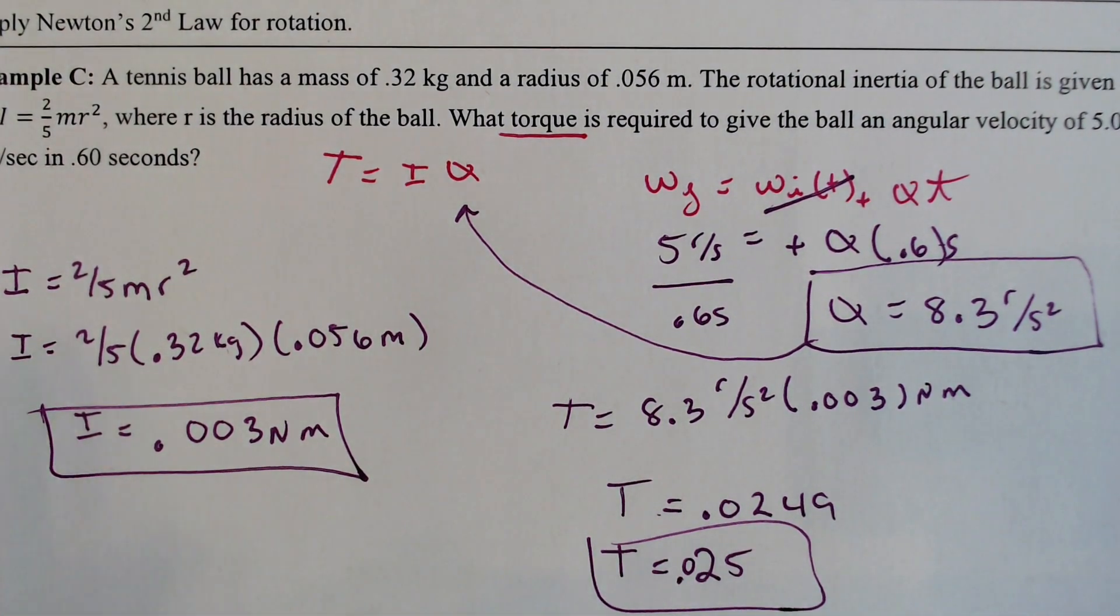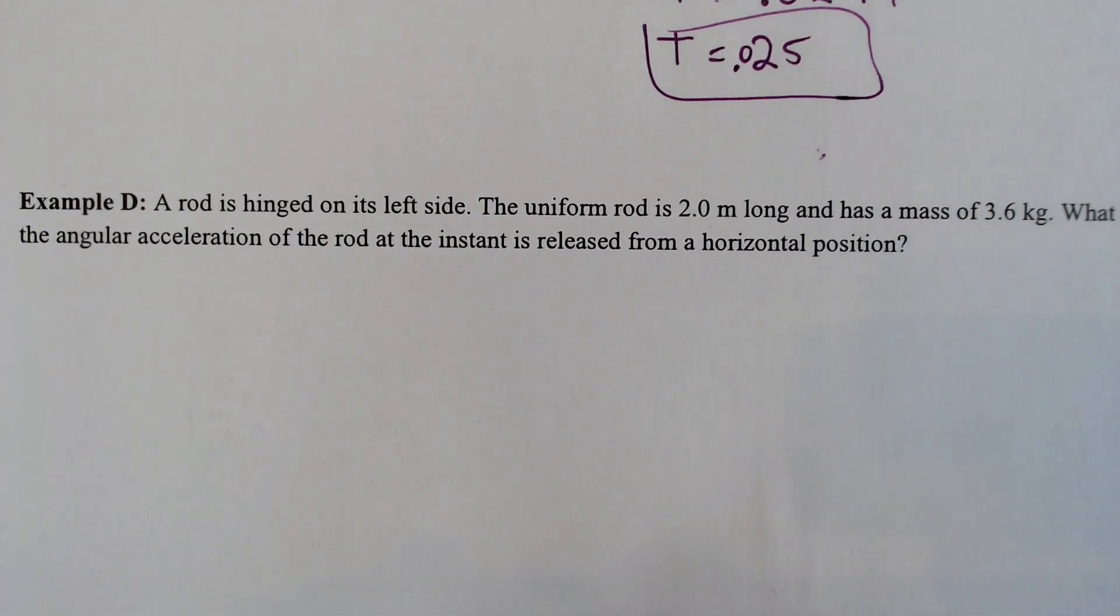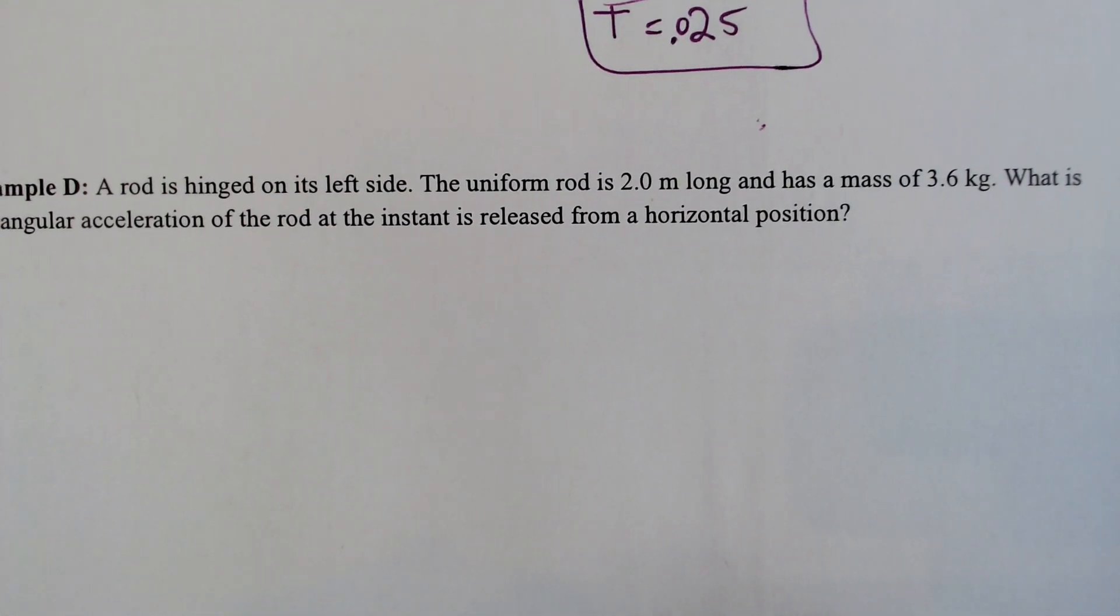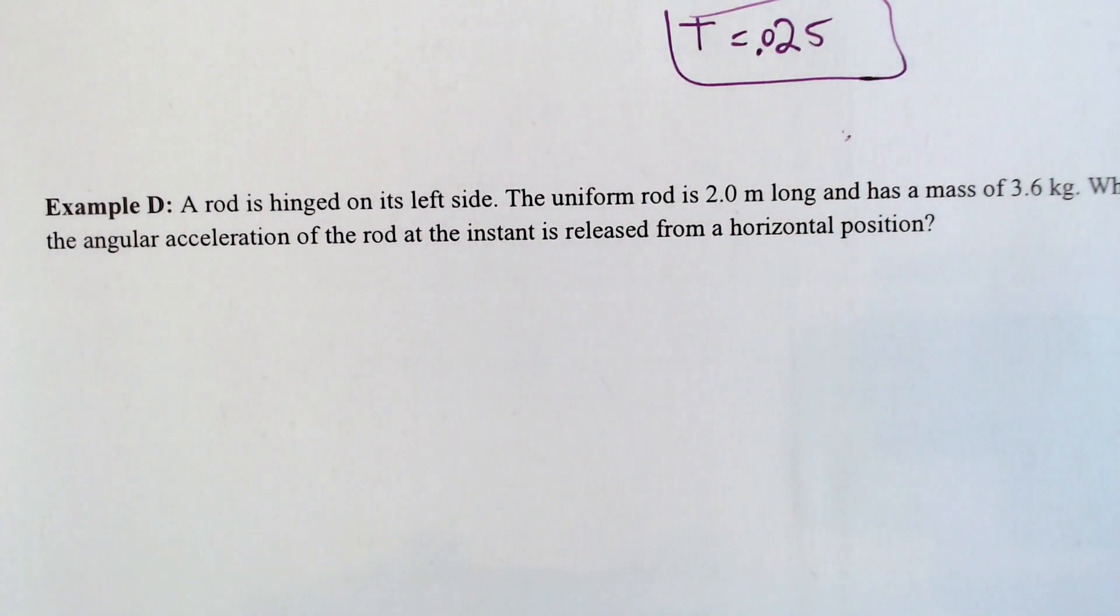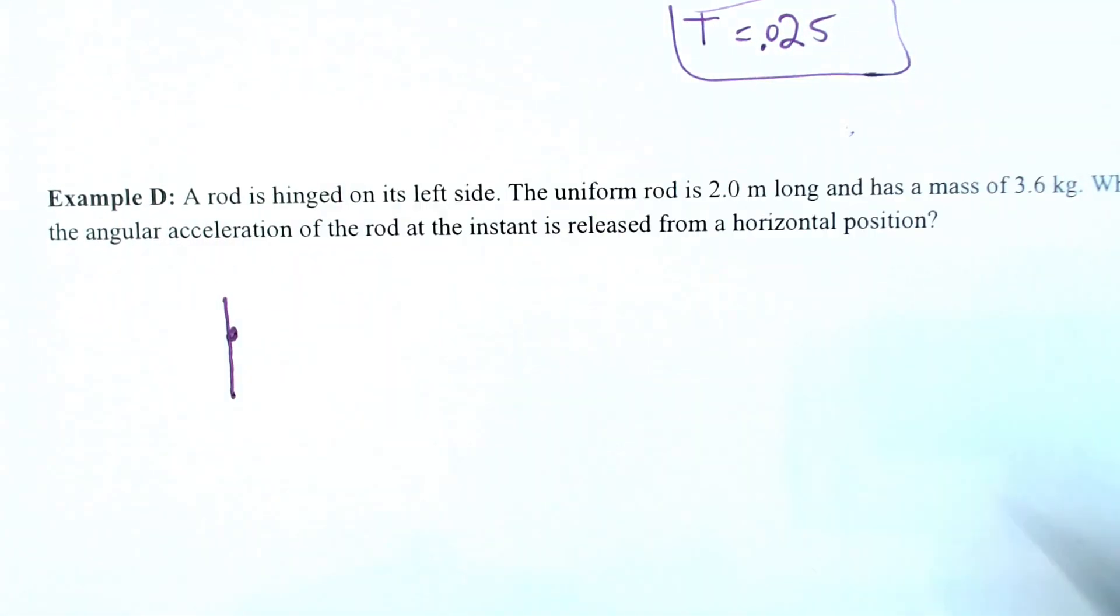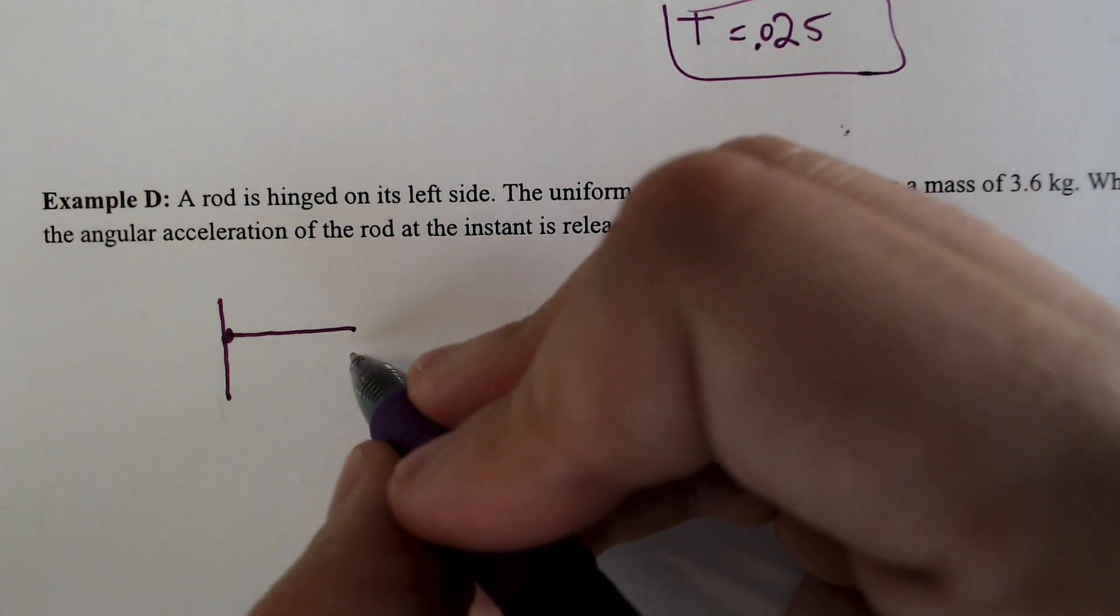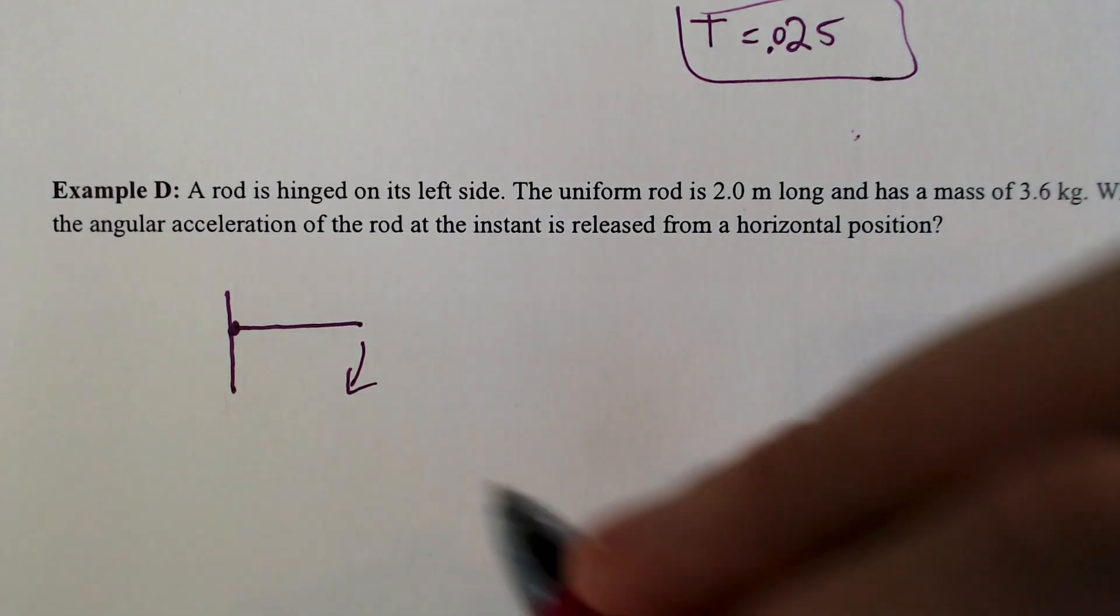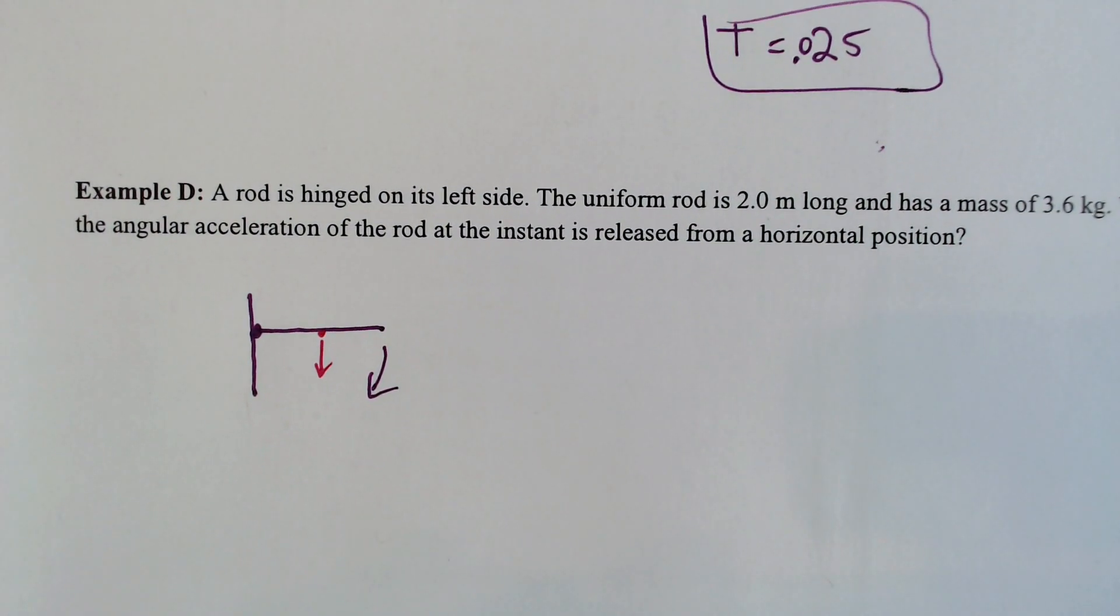Next up, we have a rod being hung and hinged on its left side. A uniform rod of 2 meters long and has a mass total of 3.6 kilograms. What is the angular acceleration of the rod when it is released from the horizontal position? So assume that there's a rod right here kind of attached to a wall or hinged to a wall and it's being released. So it's going to be moving that away. Now when it's released, its mass is going to be dead center, so to speak, and gravity will affect it.